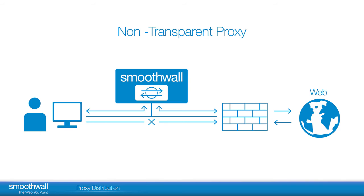Third-party solutions: third-party applications are available for Windows which can, at login, automatically configure web browser proxy settings. These range from simple programs designed specifically to automate proxy configuration, to more sophisticated applications that provide a range of services such as monitoring the user's desktop.